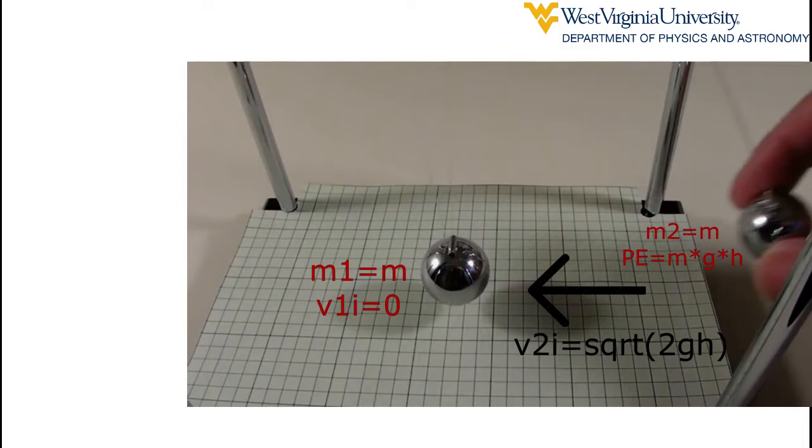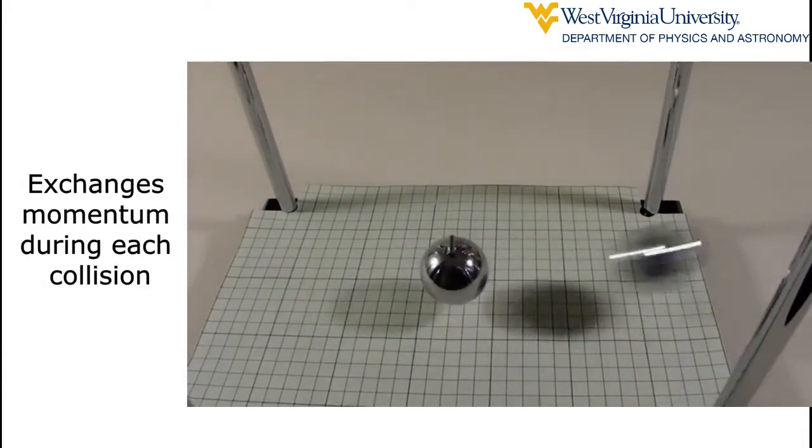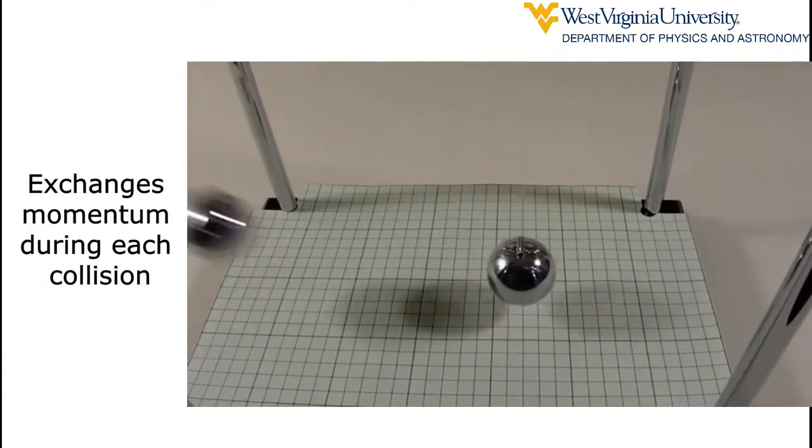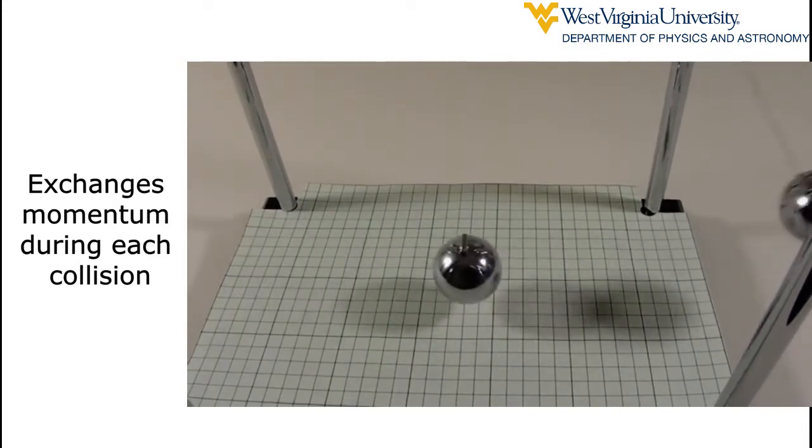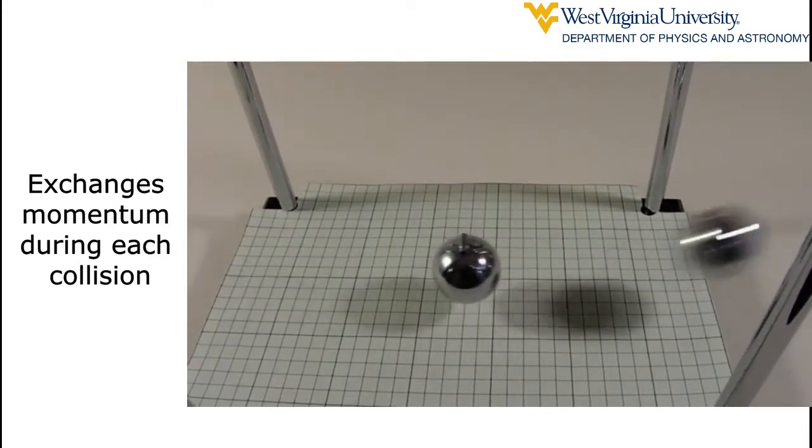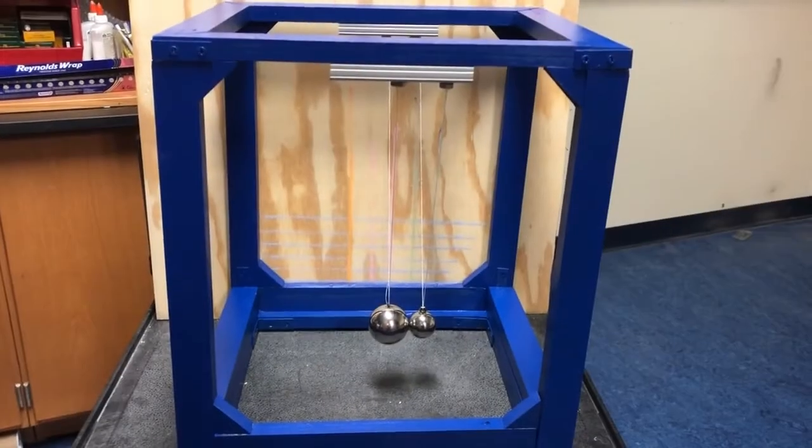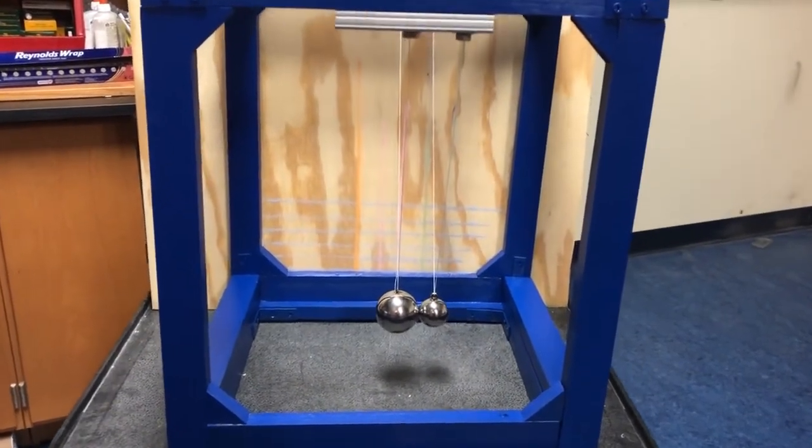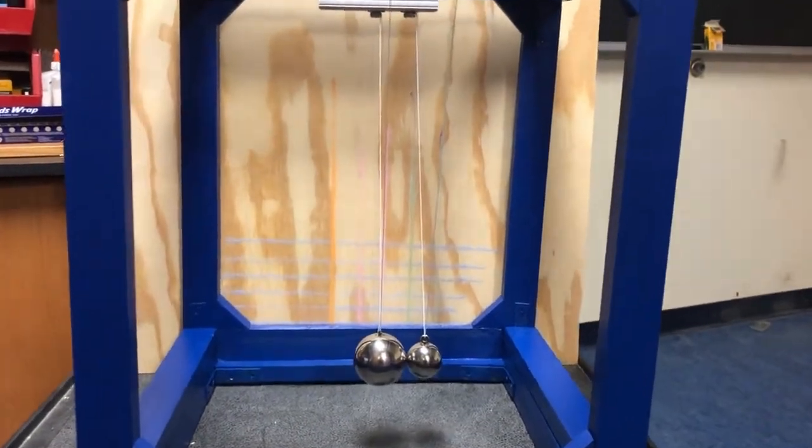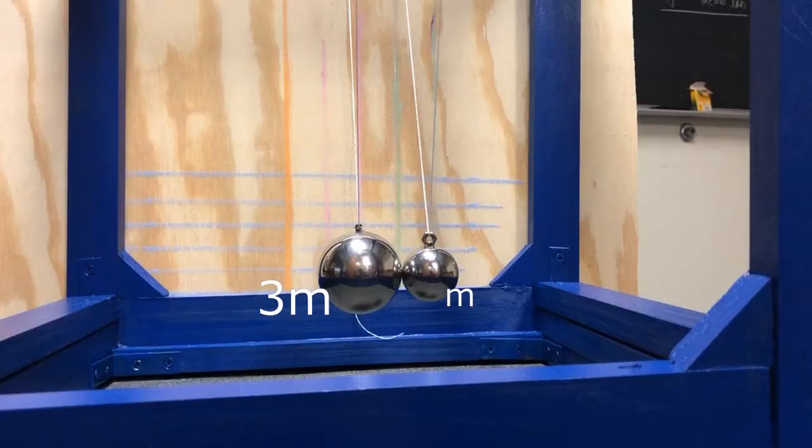after collision momentum transfers to the rest ball. Consequently, turn by turn they are in motion and rest state. Let us see another scenario where a ball hits another ball of three times the mass.